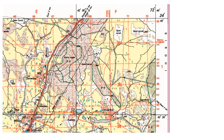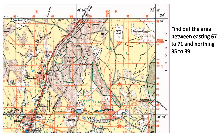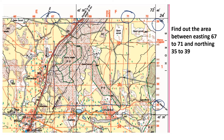In today's class we will learn how to find area in toposheet. This is one portion of a toposheet. The question is: find out the area between easting 67 to 71 and northing 35 to 39. Where is 67? 67 is here, 71 is here, 35 is here, and 39 is here. That means we have to find out the area of this entire block.